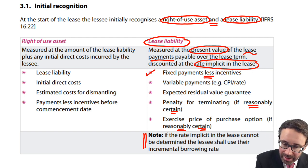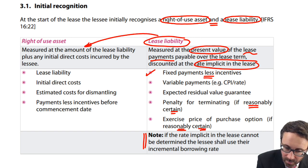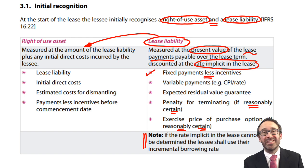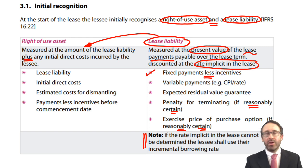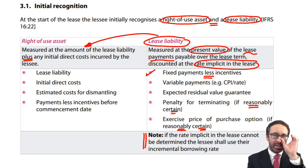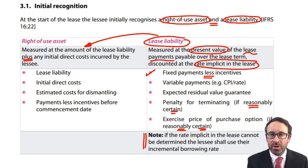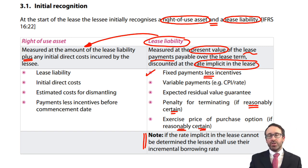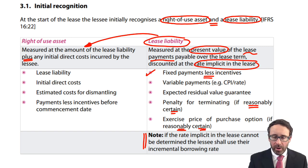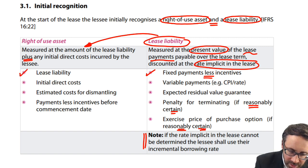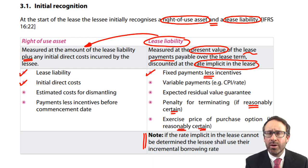Once you have the lease liability, that figure is what you start with for the value of the right-of-use asset. You recognise the same amount as the value of the right-of-use asset, and then add on any initial direct costs incurred by yourself as the lessee — such as delivery costs or installation costs. The value of the right-of-use asset is the lease liability plus any initial direct costs. That's it.